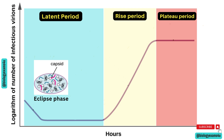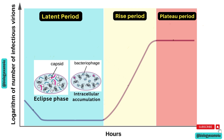After the eclipse phase, there is intracellular accumulation. During intracellular accumulation, newly synthesized viral components start assembling into complete phage particles within the host cell.